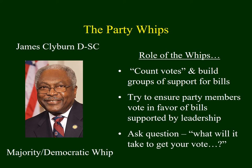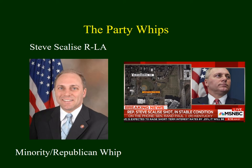Often it's the whip's job to say: if you're on the fence on this topic, what will it take to get your vote? Maybe a proposal needs to be modified a little bit. Both parties have whips. Clyburn is the current Democratic whip. Steve Scalise is the Republican whip in the House, from Louisiana, with a background in computer science. A couple of years ago, he was actually shot when the Republican party was getting ready for a baseball game against the Democrats. He's had several operations, but he's back in Congress and doing well.